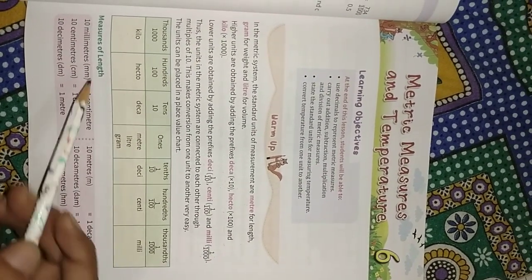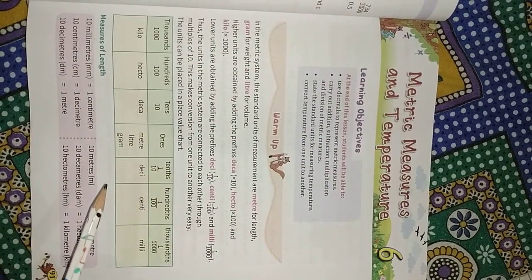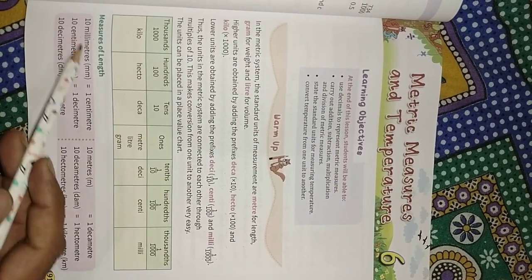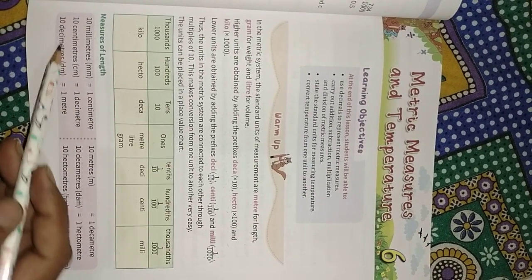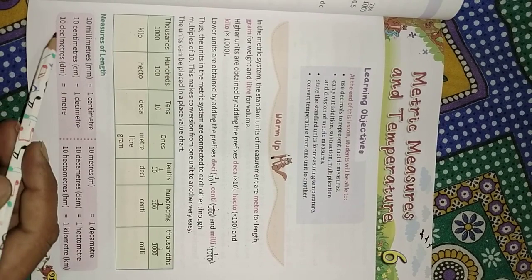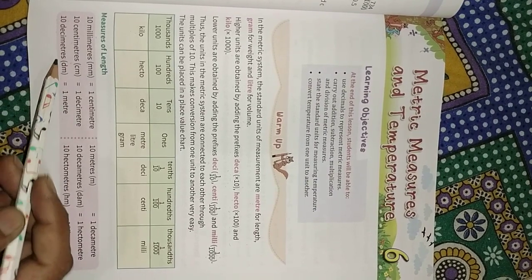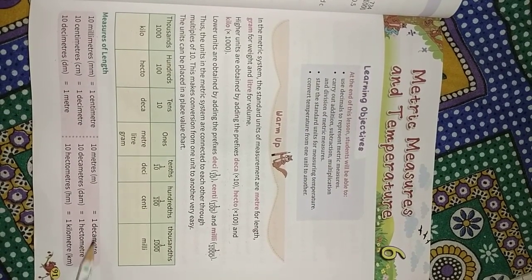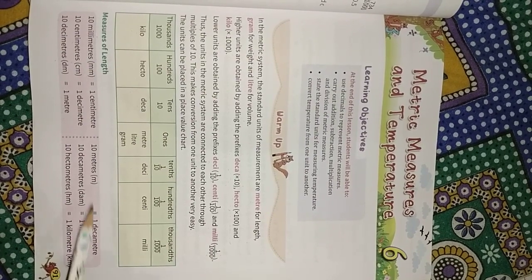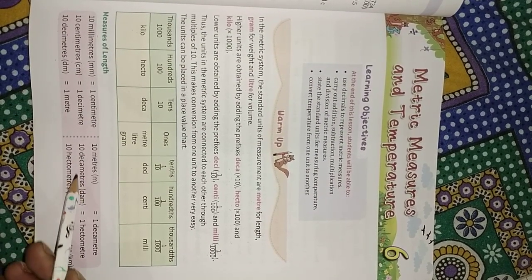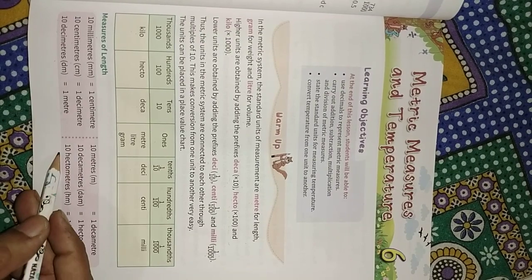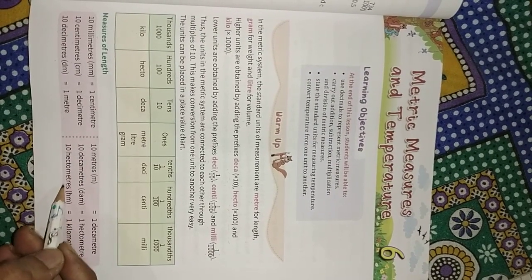Now these are some measurements of length. 1 cm equals 10 mm. 1 decimeter equals 10 cm and 1 meter equals 10 decimeters. 1 decameter equals 10 meters, 1 hectometer equals 10 decameters, and 1 kilometer equals 10 hectometers.